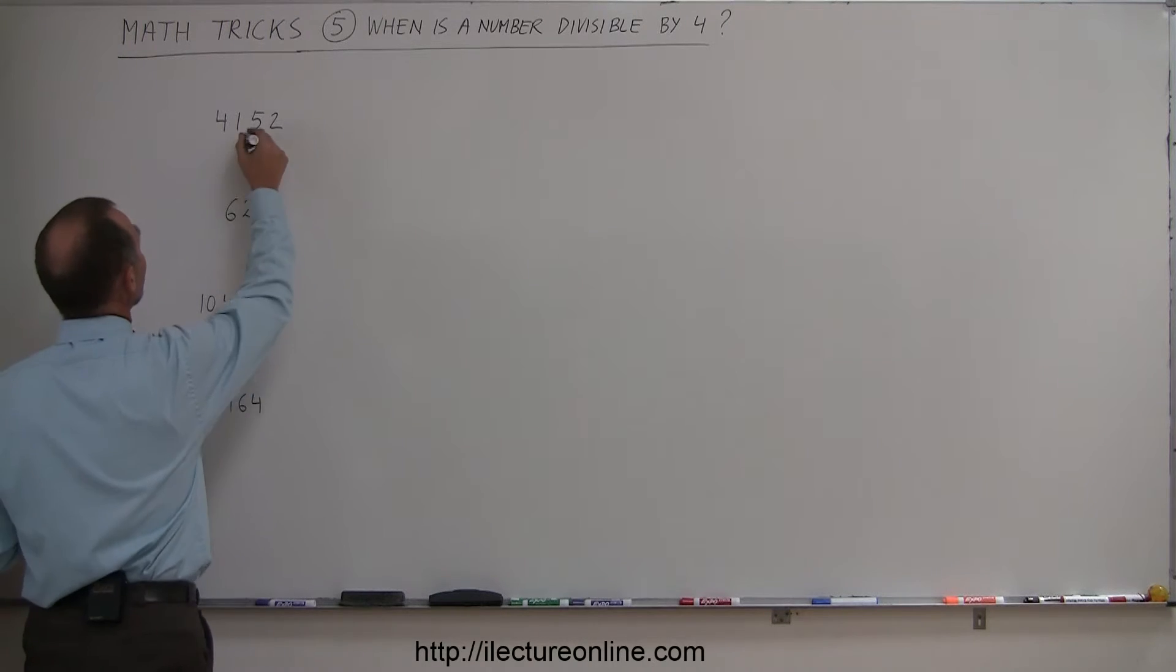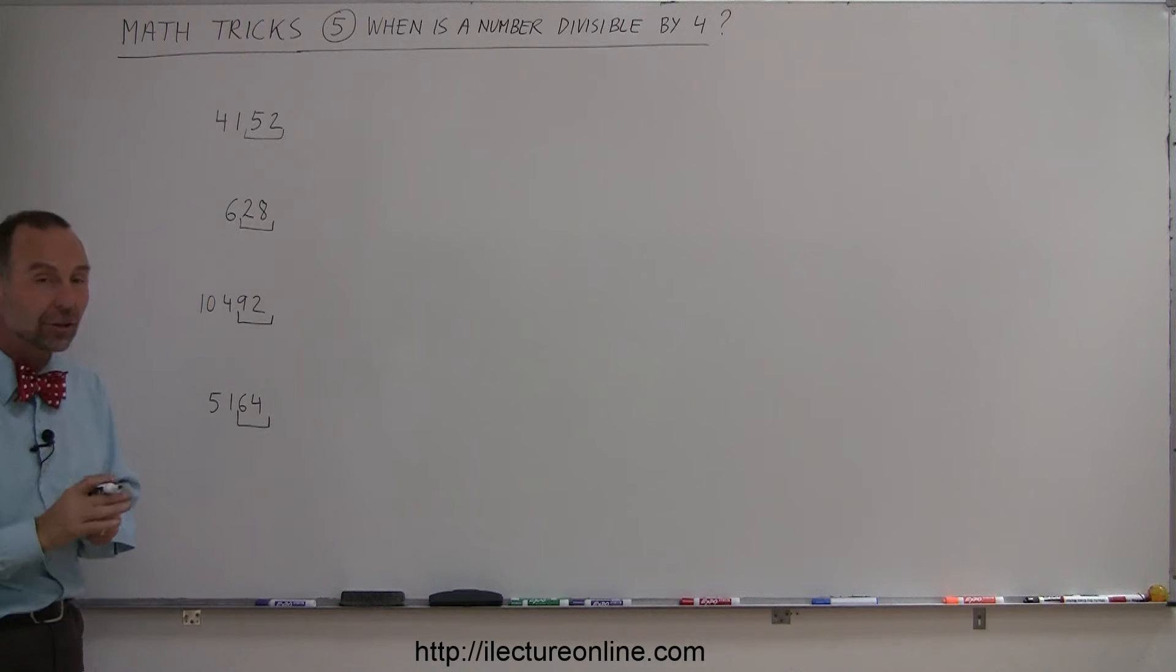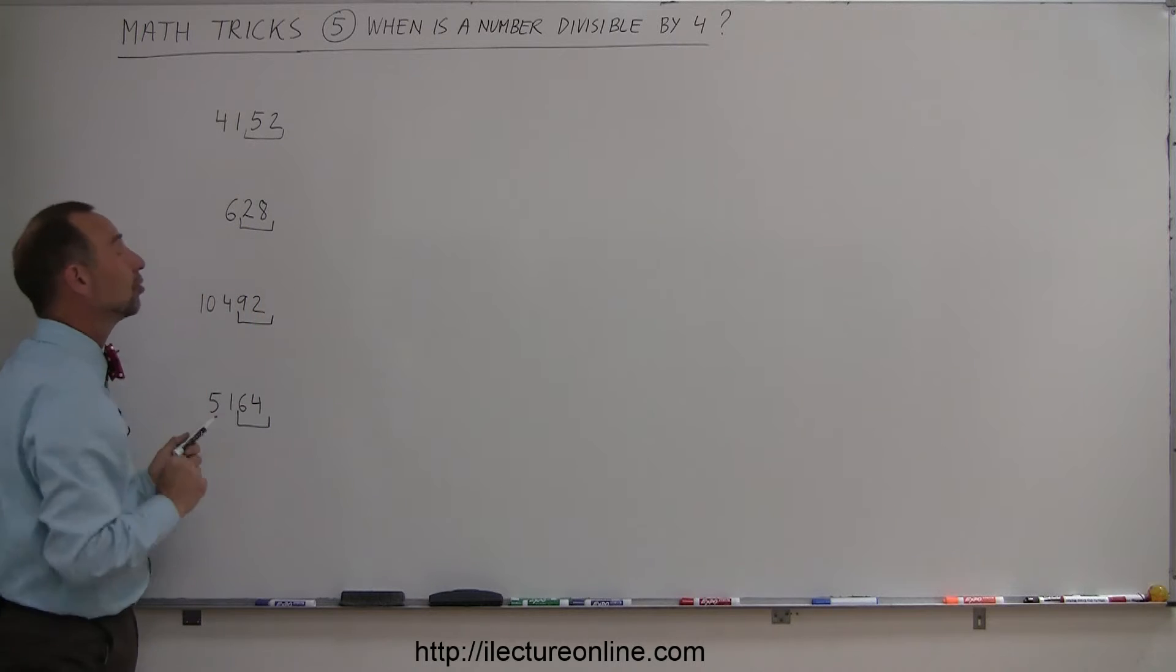For example, you only worry about the 52, the 28, the 92, and the 64, because we know that a number like 100 is divisible by 4, so anything bigger than 100, not a problem. It's just the last two digits.